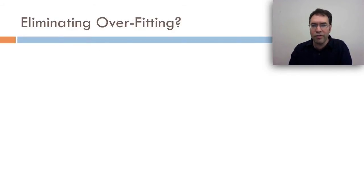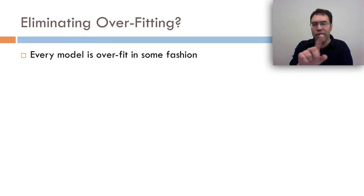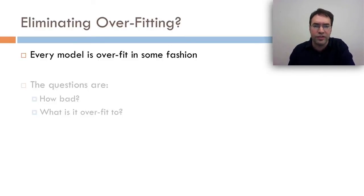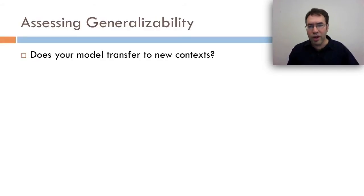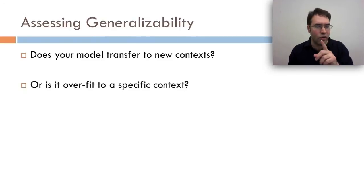Can you eliminate overfitting? No. Every model is overfit in some fashion. I'm sorry to tell you, everything you ever do in data mining will be overfit. But you can do things that are less harmfully overfit and less overfit. The question is how bad, and what are you overfit to? The way I like to think about controlling overfit is in terms of assessing generalizability. Does your model transfer to a new context, or is it overfit to a specific context, whatever that context is?